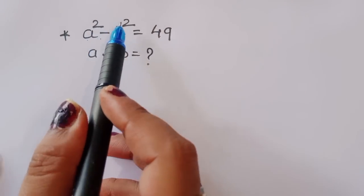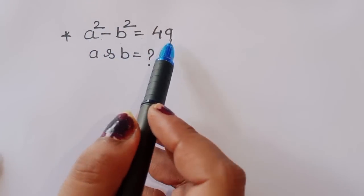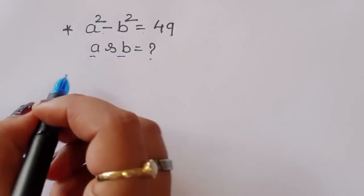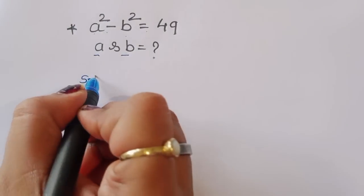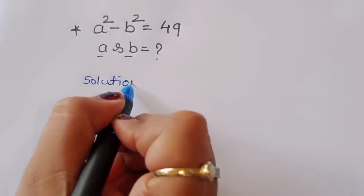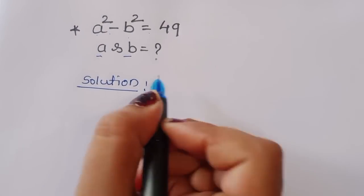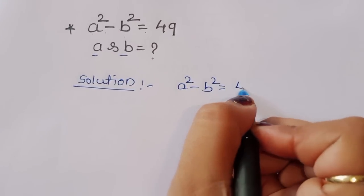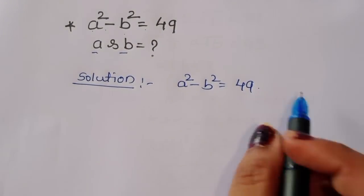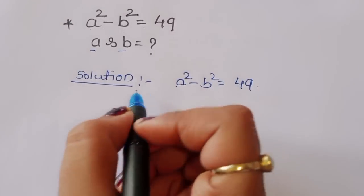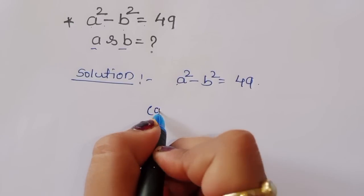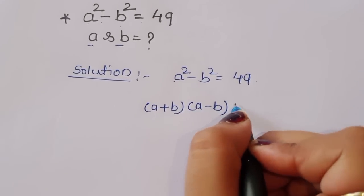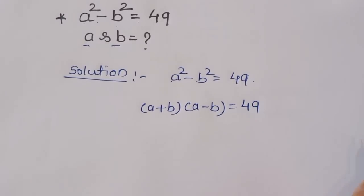The question is: given a squared minus b squared is equal to 49, we have to find out the value of a and b. So let's see the solution. We know the formula of a squared minus b squared, so a plus b times a minus b is equal to 49.